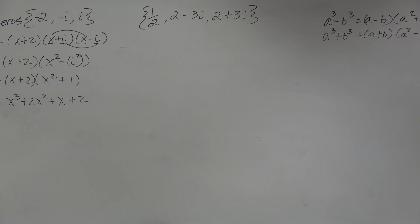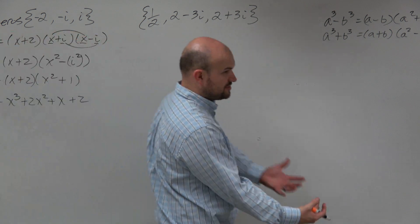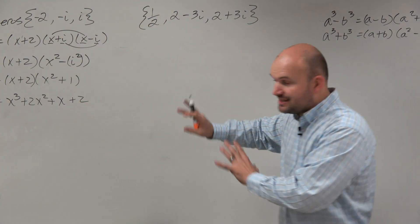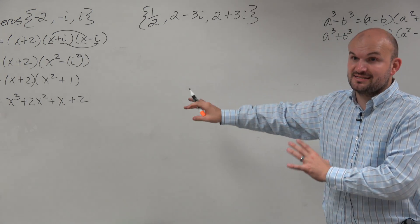Students got confused because they had trouble going from zeros to factors. They could follow the quadratic formula, but how I went from the answer of the quadratic formula into the zeros was too many steps. So again, let's break this down. Let's kind of do what we did in the last example.